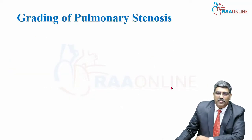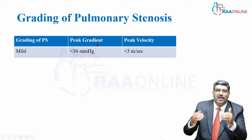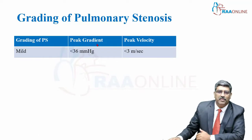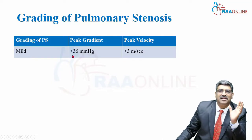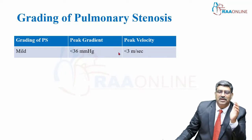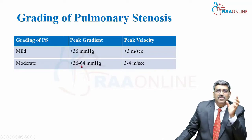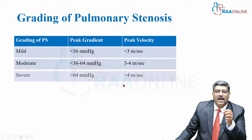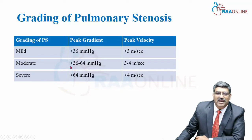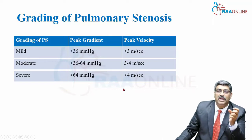Pulmonary stenosis is graded based on the gradient across the pulmonary valve and the peak velocity. In mild pulmonary stenosis, the gradient is less than 36 mmHg and peak velocity is less than 3 m/s. In moderate, the peak gradient is 36 to 64 mmHg and velocity is 3 to 4 m/s. In severe, the gradient is greater than 64 mmHg and velocity is greater than 4 m/s.